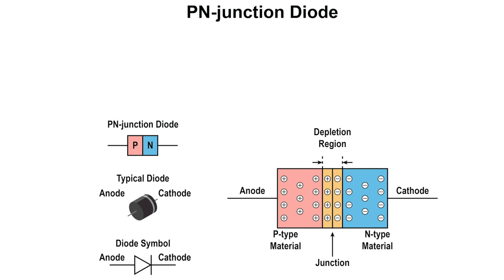Diode leads are identified as the anode lead, connected to the P-type material, and the cathode lead, connected to the N-type material. The purpose of the diode is to allow current in one direction and block current in the opposite direction.